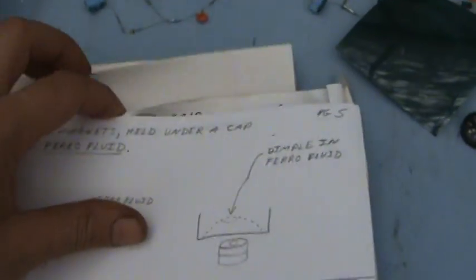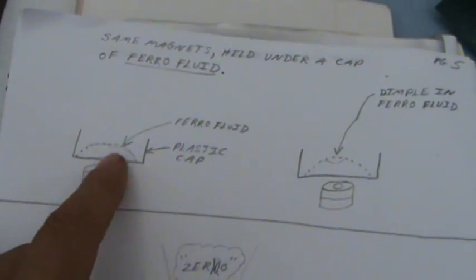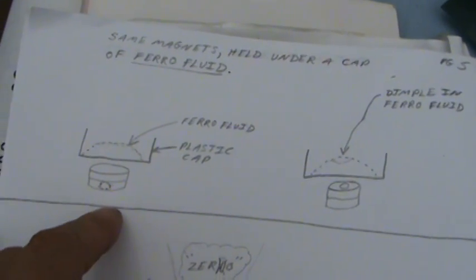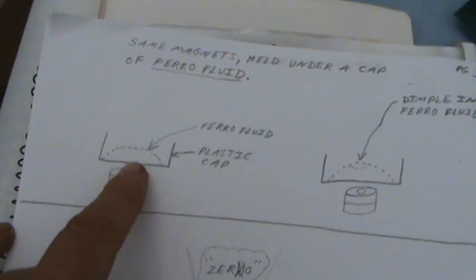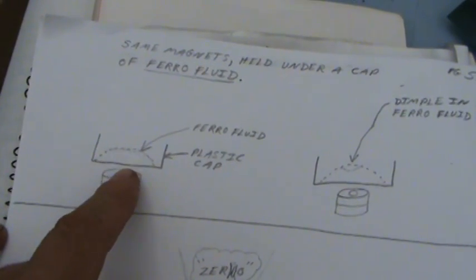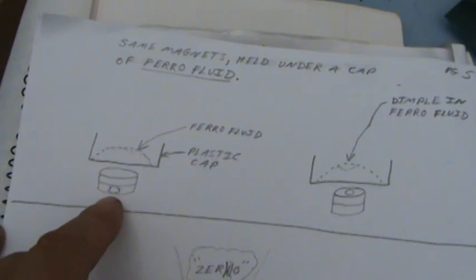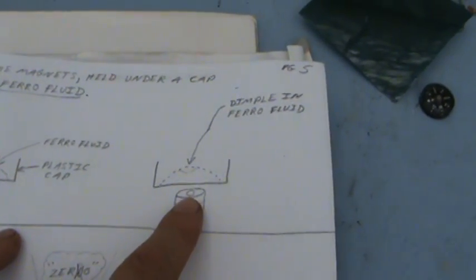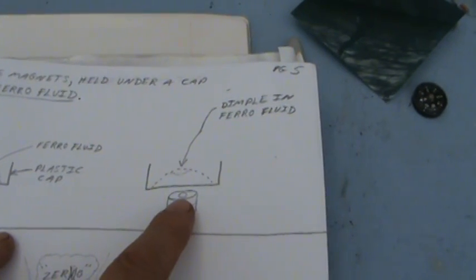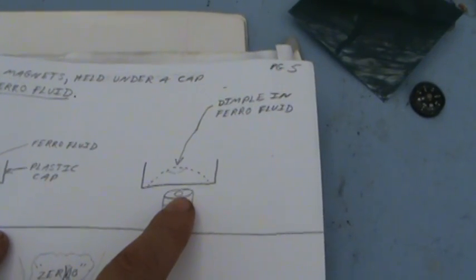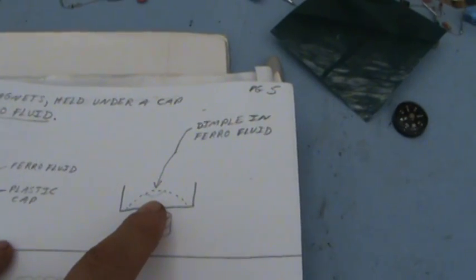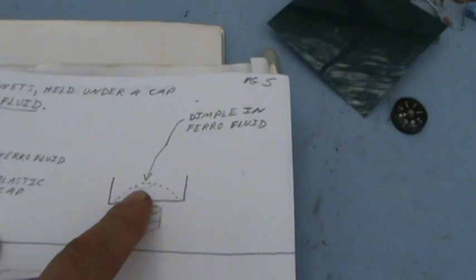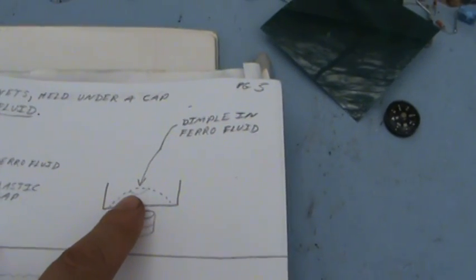As looking at these magnets now through a plastic cap filled with some ferro fluid. Here's our two magnets below the cap with our puddle of ferro fluid. Over here, you can see we got this side with that, where there's two norths up there with the ring.